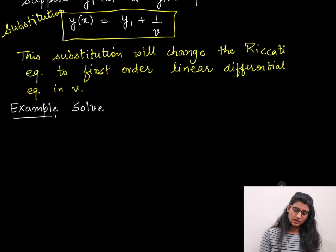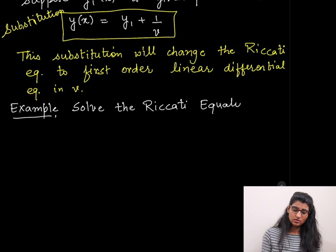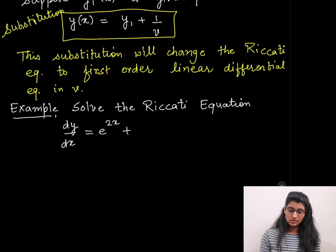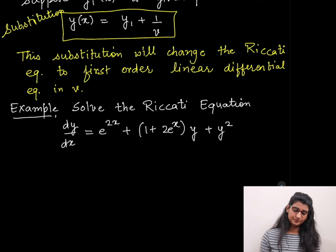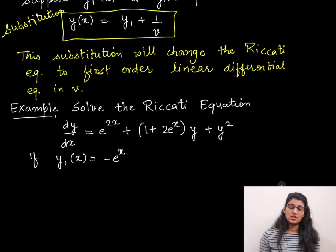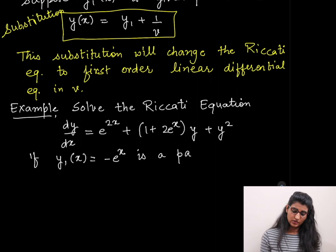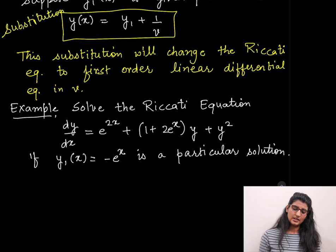Let's see one example and you will realize solving the Riccati equation is super easy. Our example is to solve the Riccati equation: dy over dx equal to e to the power 2x plus 2 times e to the power x times y plus y squared, given that y1(x) equal to negative e to the power x is a particular solution of the given Riccati equation.